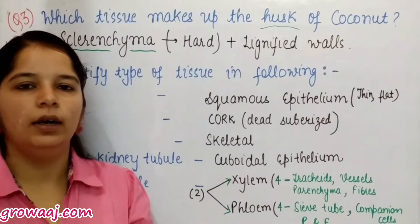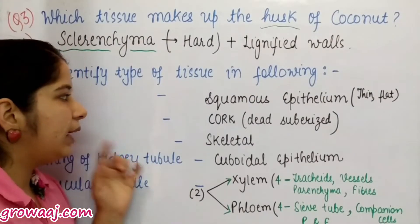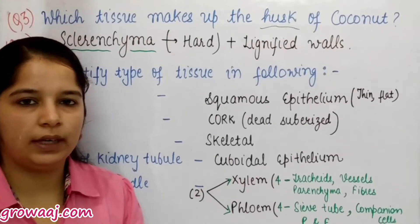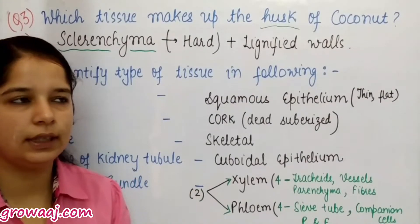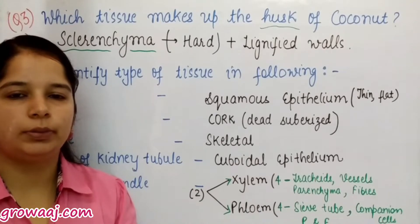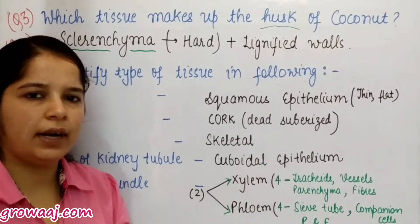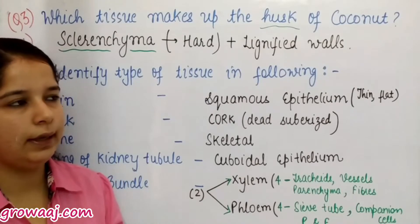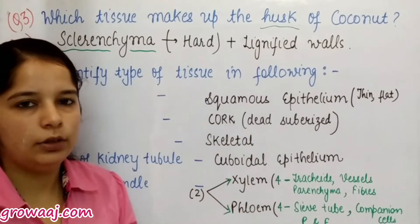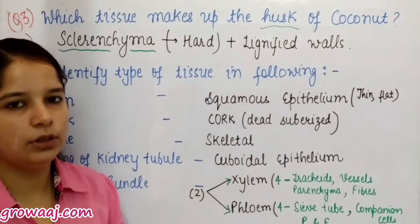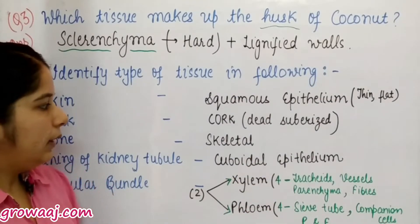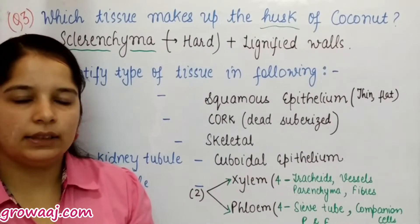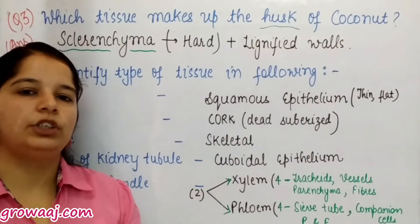Next is the bark of a tree, which is cork tissue. Cork consists of dead suberized cells. Suberin is a substance that makes it impervious to water and gas exchange, meaning no gas or water exchange takes place through it. Cork is formed by a secondary meristem and is found in older plants.